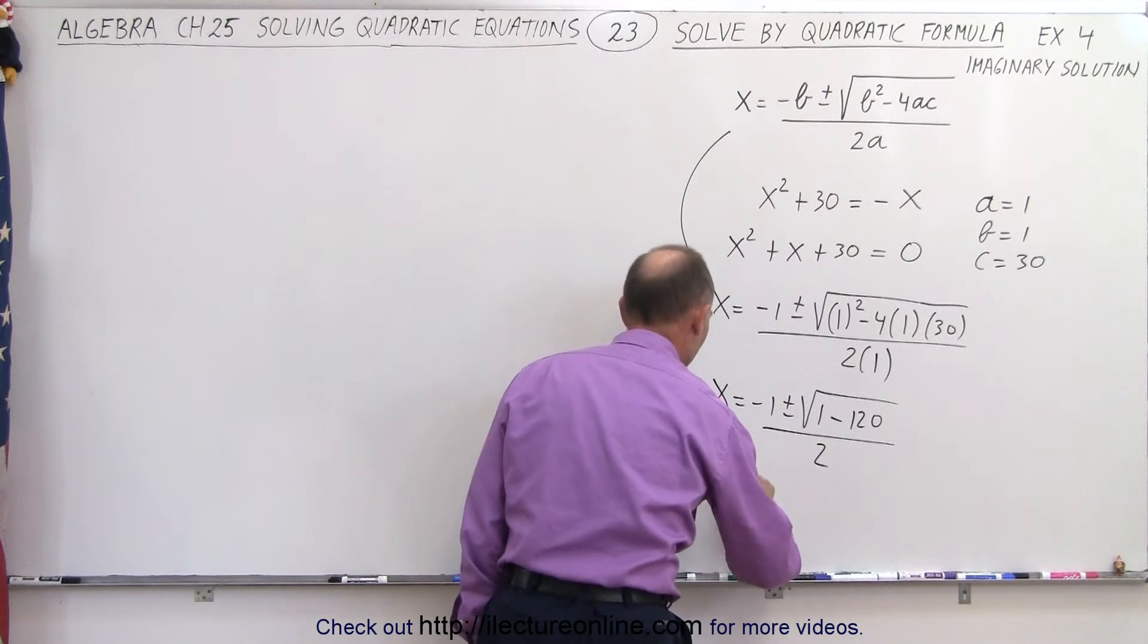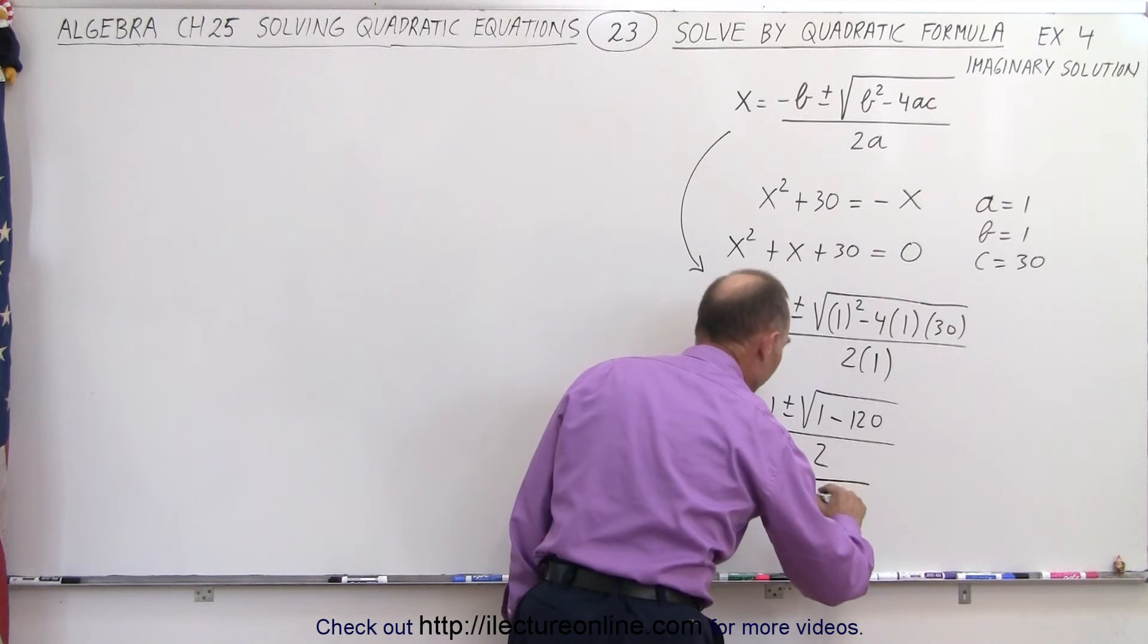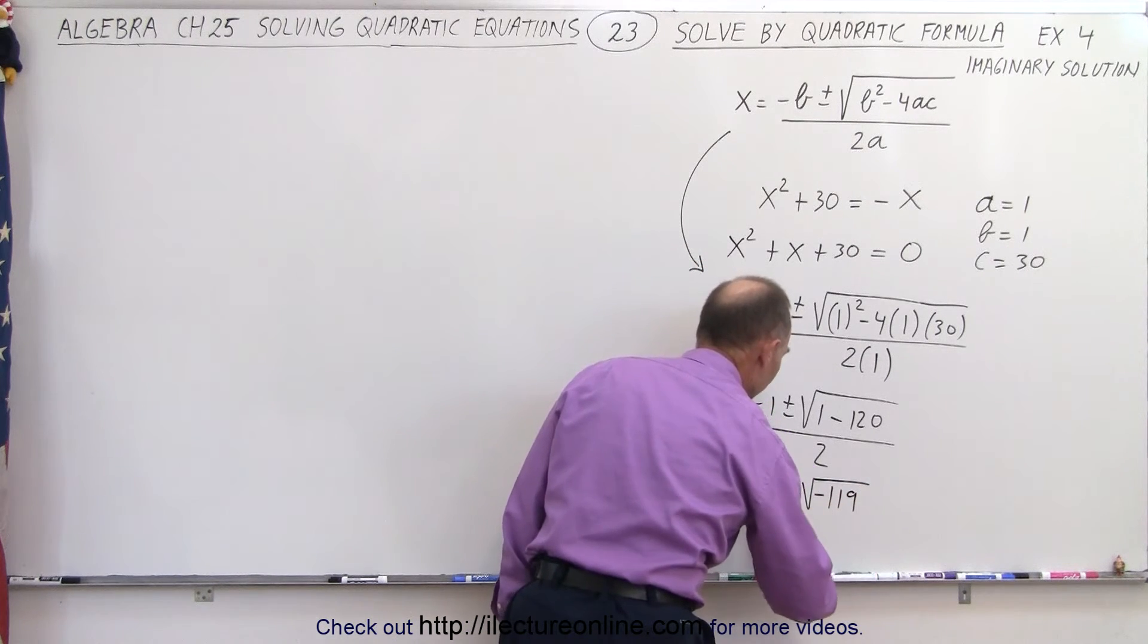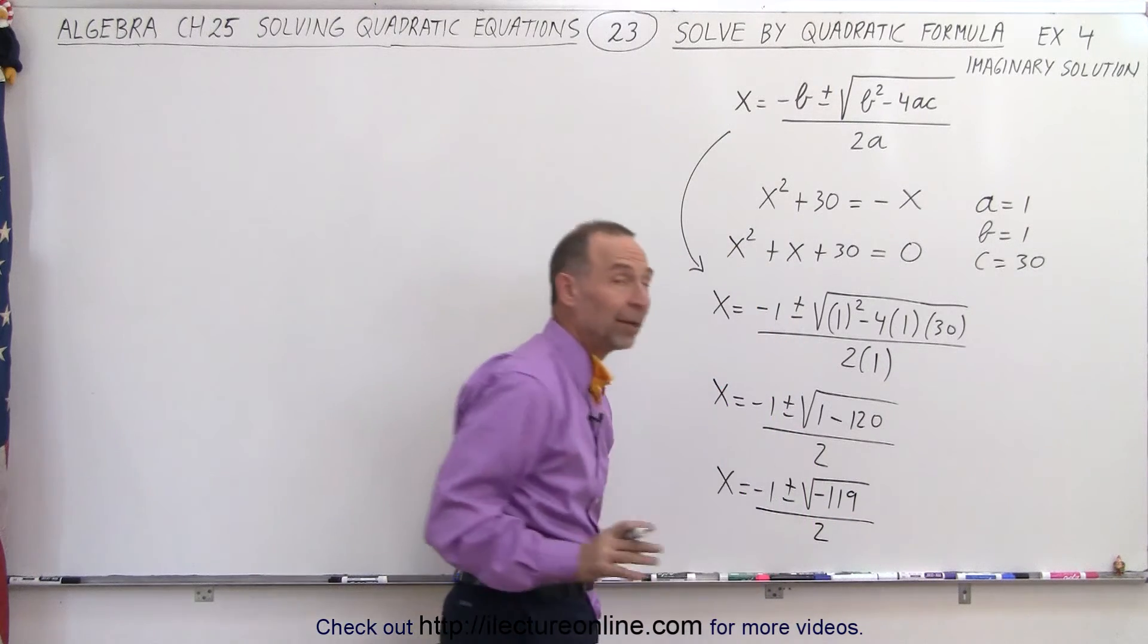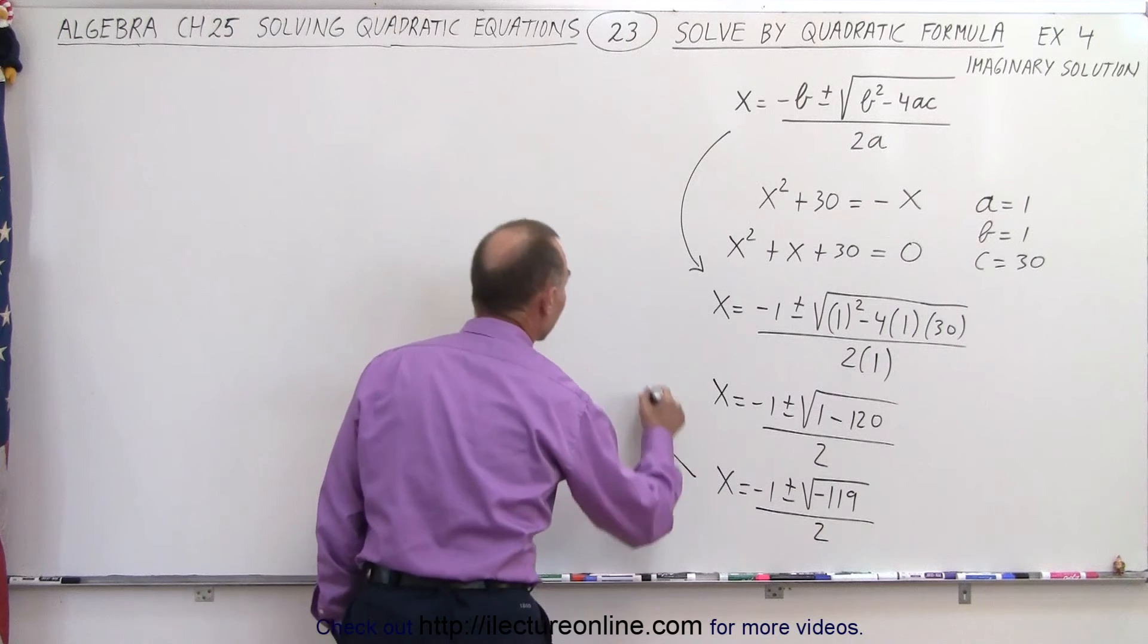Continuing to simplify that, we have x is equal to minus 1 plus and minus the square root of minus 119 divided by 2. If I'm not mistaken, 119 is a prime number, so we cannot simplify that any further.